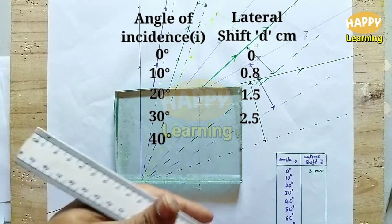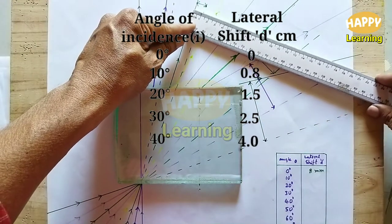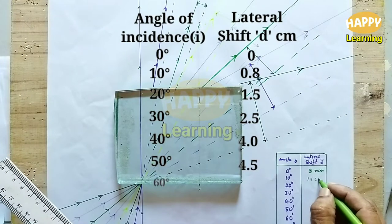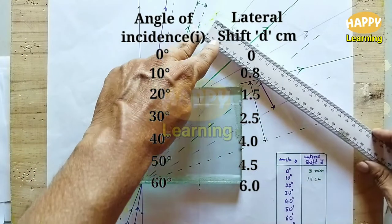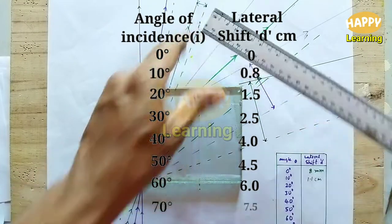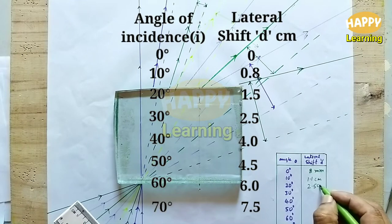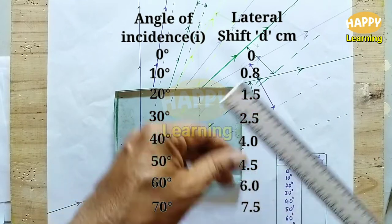For 20 degrees, the shift is 2.5 centimeters. For 30 degrees, the shift is 2.5 centimeters. And for 40 degrees, the shift is 4.5 centimeters.